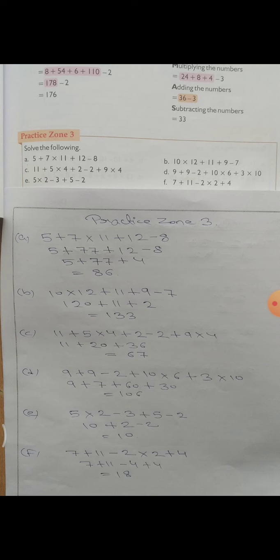अब C part देखिए. C part के अंदर कह रहे हैं: 11 plus 5 multiply 4 plus 2 minus 2 plus 9 multiply 4. ध्यान से देखिए: plus 2 और minus 2 — plus minus = minus, तो cancel out हो जाएगा यह दोनों. Remaining terms: 11 plus (5×4=20) plus (9×4=36). तो 11 plus 20 plus 36, sum up करेंगे तो 67 is the answer.